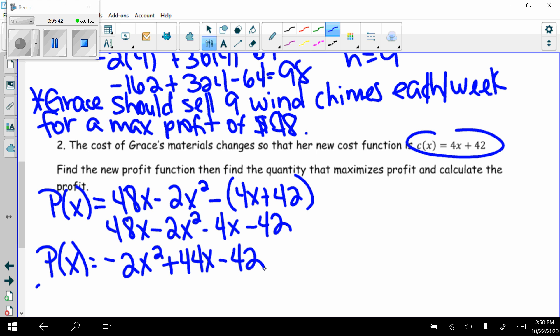So now, again, I would need to find the vertex of my new equation. I'm looking for my vertex. H equals negative 44 divided by 2 times negative 2. Negative 44 divided by negative 4 gets me positive 11. So now I know we're having to sell 11 wind chimes.